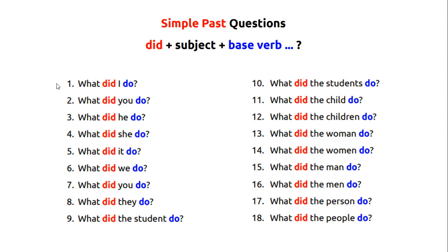What did I do? What did you do? What did he do? What did she do? What did it do? What did we do? What did you do? What did they do? What did the student do?